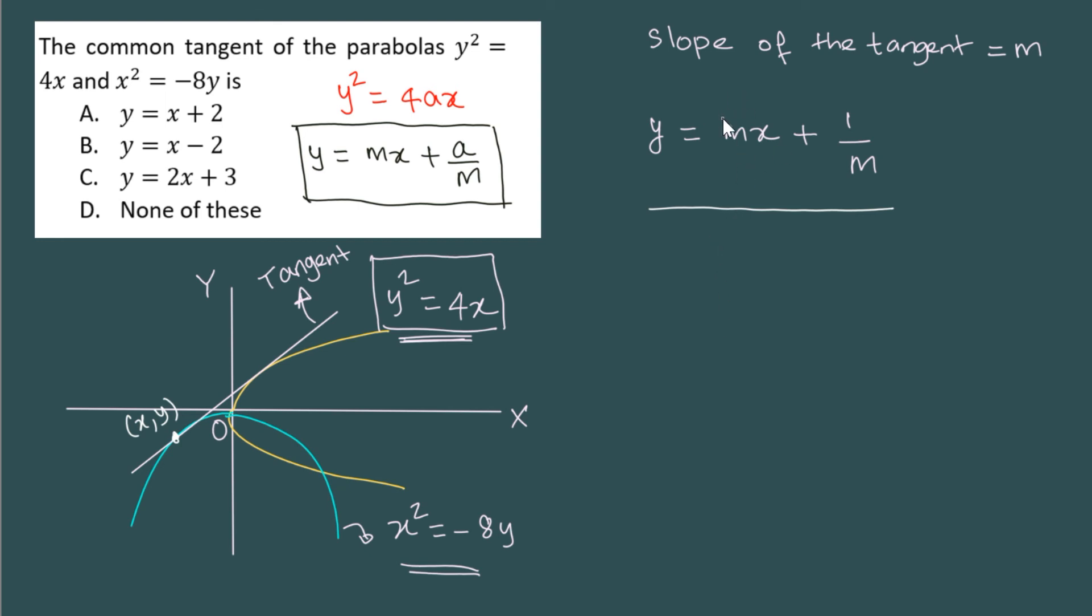Because y should be same in both the equations, I can take the right hand side from the equation of the tangent and then substitute in the y value for the equation of the parabola. So what do I have here? x square is equal to minus 8 into mx plus 1 by m. So if I rewrite this a little bit.